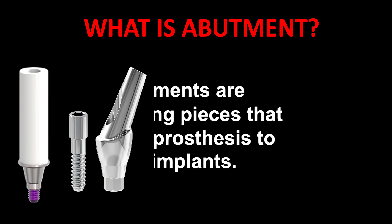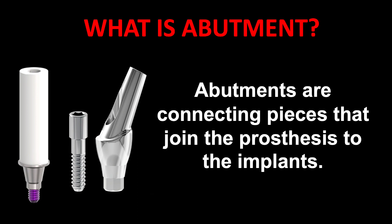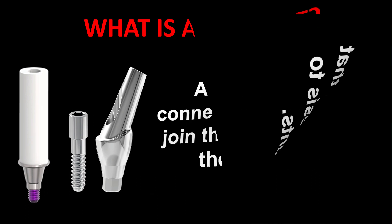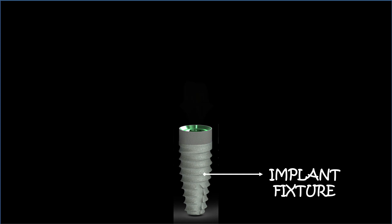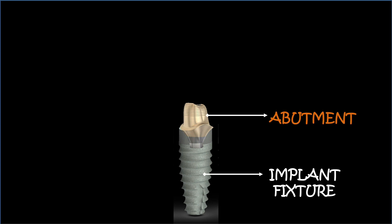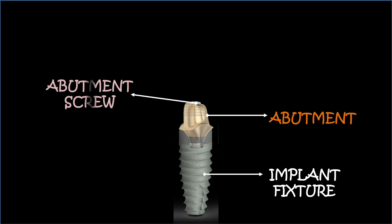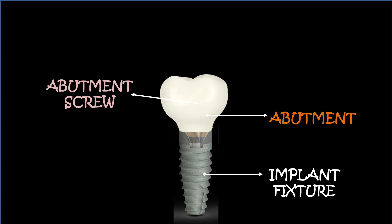First of all, what is an abutment? Abutments are connecting pieces that join the prosthesis to the implant. It fixes over the implant with the help of a screw. Looking at the figure, we have the implant fixture over which the abutment is tightened — this is the implant abutment, tightened over the implant with the abutment screw — and over which the prosthetic part is given.